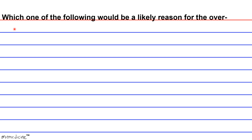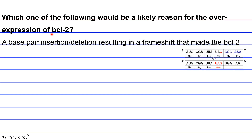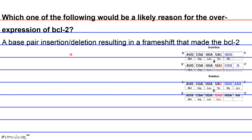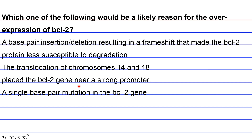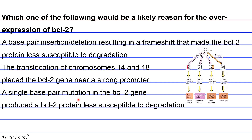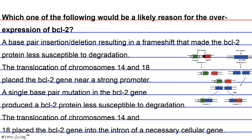Question: Which of the following would be a likely reason for the overexpression of BCL-2? A) A base pair insertion or deletion resulting in a frameshift that made the BCL-2 protein less susceptible to degradation. B) The translocation of chromosomes 14 and 18 placed the BCL-2 gene near a strong promoter. C) A single base pair mutation in the BCL-2 gene produced a BCL-2 protein less susceptible to degradation. D) The translocation of chromosomes 14 and 18 placed the BCL-2 gene into the intron of a necessary cellular gene.